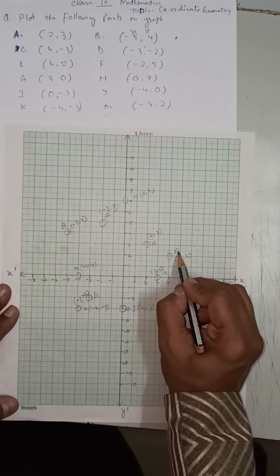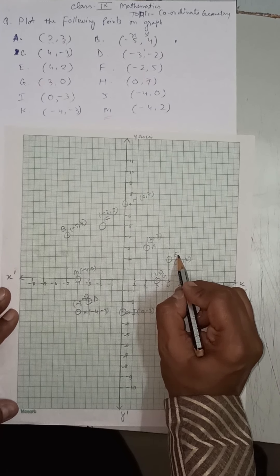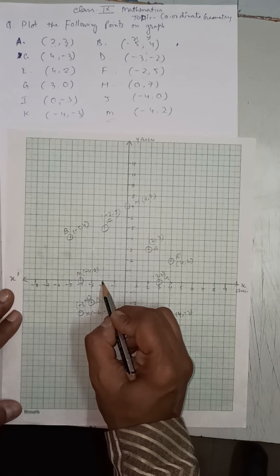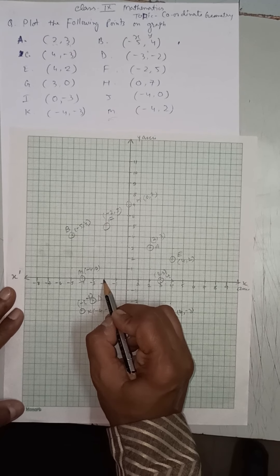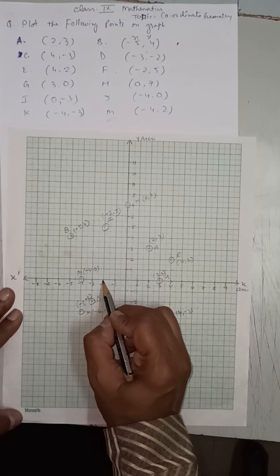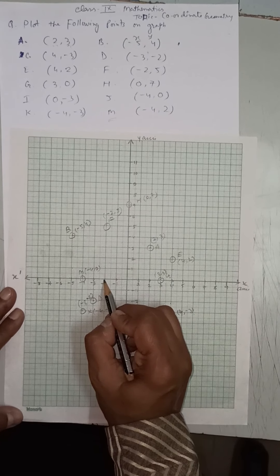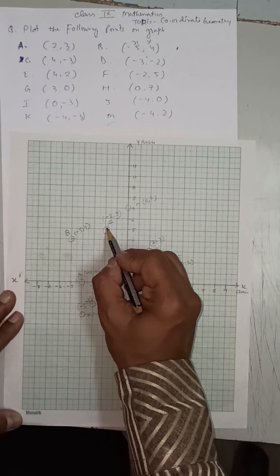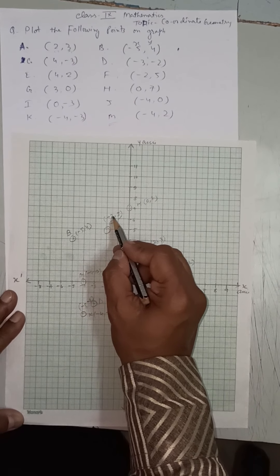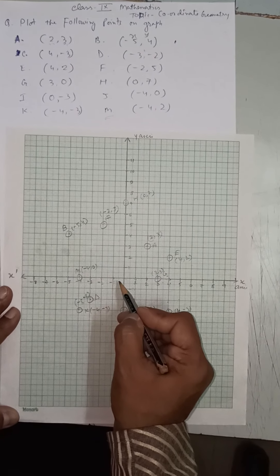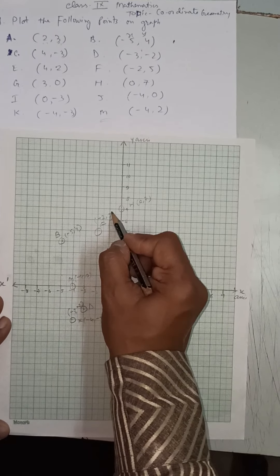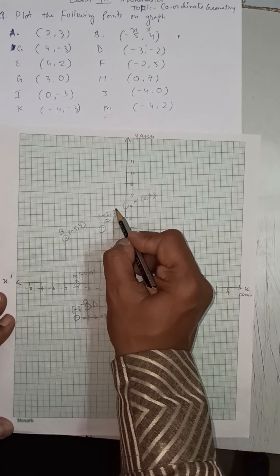Point F is (−2, 5). Minus 2 means x is negative. 5 means y is positive, so we go upward: 1, 2, 3, 4, 5. So point F is at (−2, 5) with x negative and y positive.